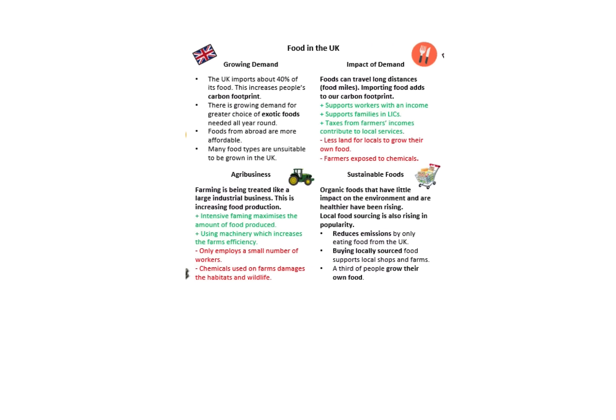Thinking about food in the UK — the impacts of demand include supporting more people with income and farmer taxes contributing to local services, but negatives include less land for locals to grow their own food and farmers being exposed to chemicals. Agribusiness — farming treated like a large industrial business — is important to understand. Intensive farming produces more food and increases efficiency, but only employs a small number of workers and uses more chemicals and pesticides, hugely impacting wildlife.